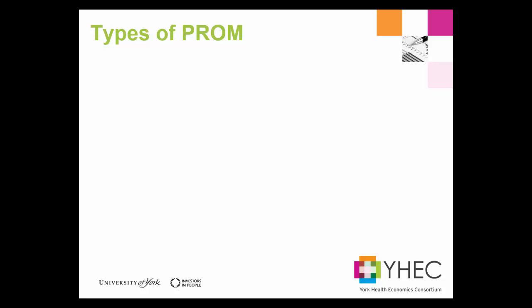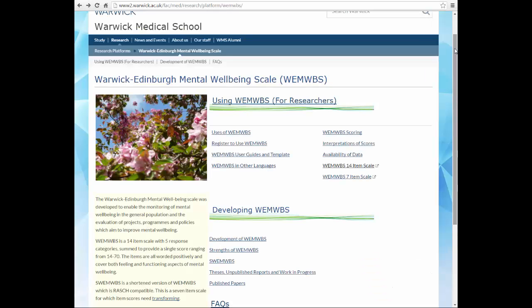There are a bewildering array of PROMs covering all types of diseases and conditions. However, PROMs fall into a number of distinct categories. For instance, we have generic PROMs which are not specific to any disease or condition and which will allow data to be compared across different disease areas. An example of a generic PROM is the Warwick Edinburgh Mental Wellbeing Scale.